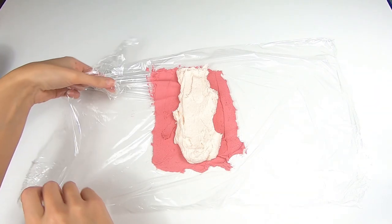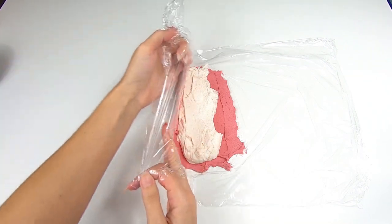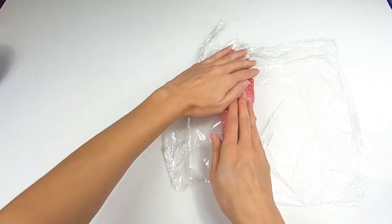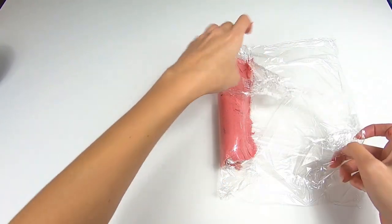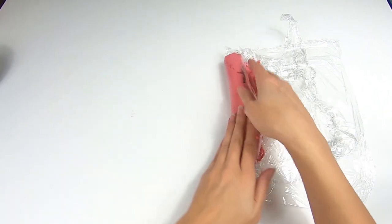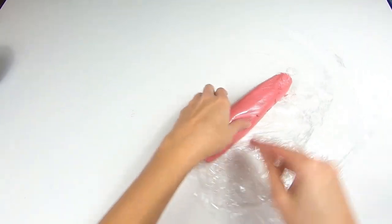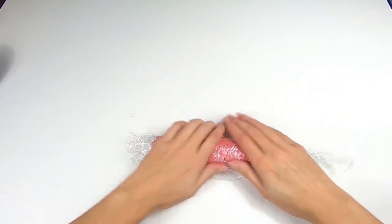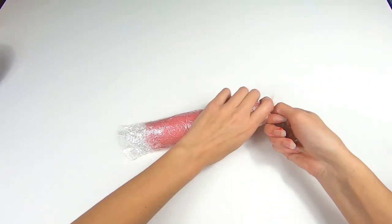Basically what you're going to do is just fold this over so that it meets the other end, and then roll it up and twist either end.